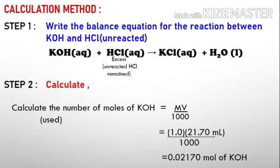Now we proceed with the calculation for this experiment. There are several steps. Step number one: write the balanced equation for the reaction between the KOH and HCl. HCl from our experiment is unreacted, which means that HCl is the excess reagent that remains. This is the equation: KOH(aq) + HCl(aq) → KCl(aq) + H2O(l).